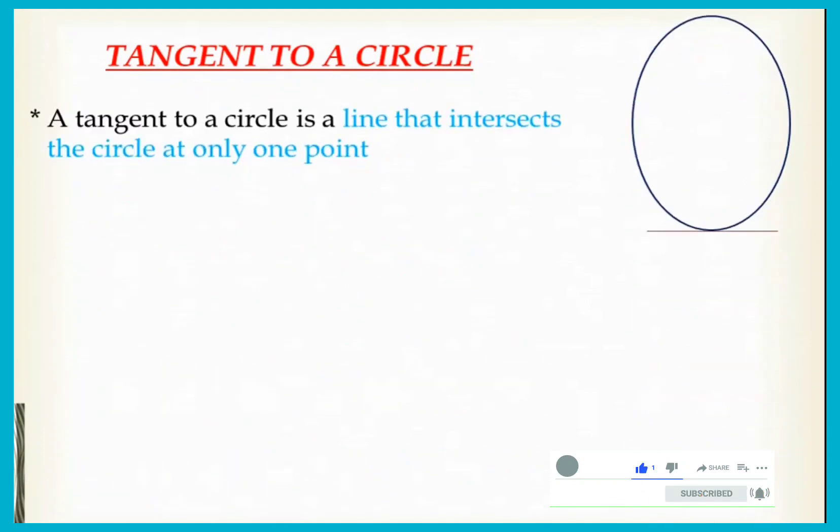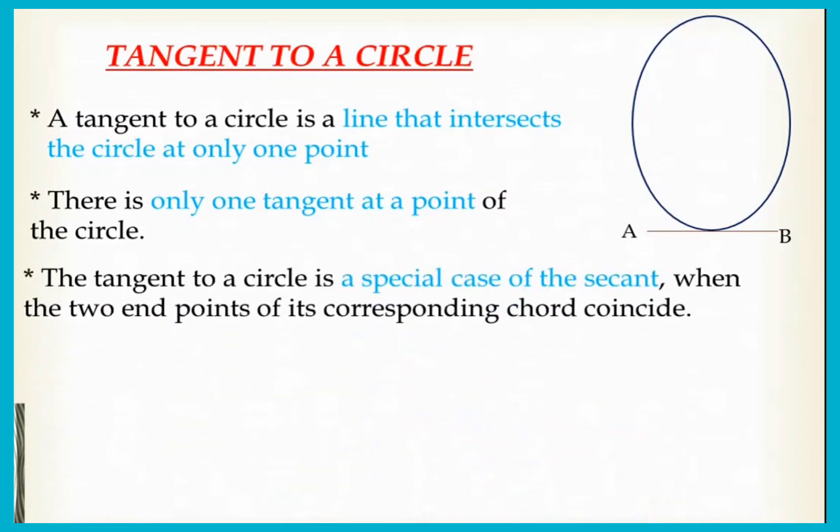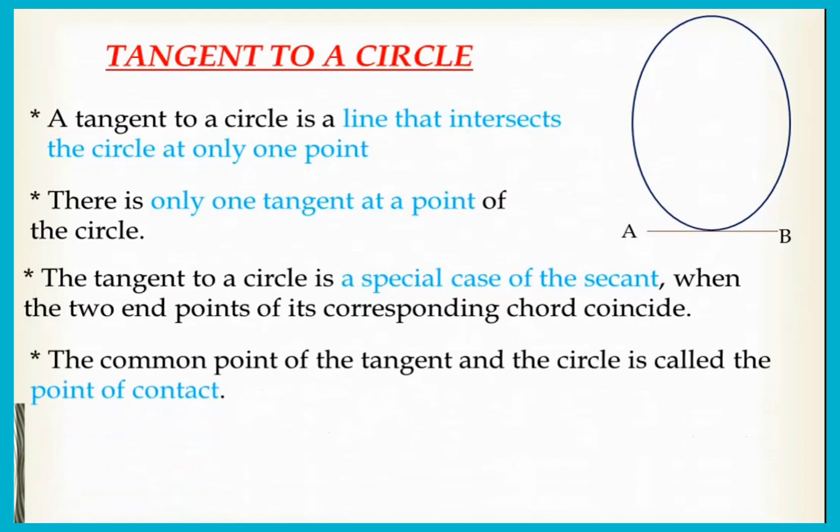A tangent to a circle is a line that intersects the circle at only one point. There is only one tangent at a point of the circle. The tangent to a circle is a special case of secant when two endpoints of its corresponding chord coincide. The common point of a tangent and the circle is called the point of contact. There are no more than two tangents parallel to a given secant.